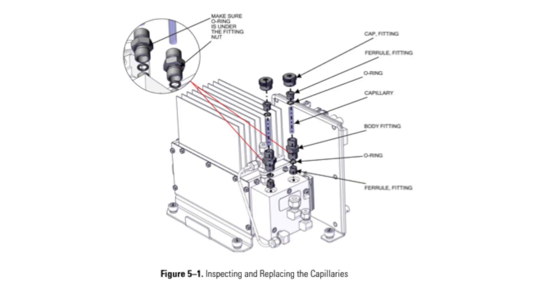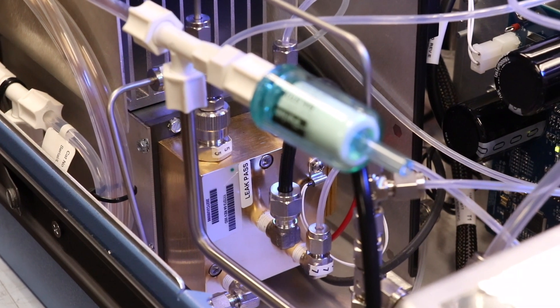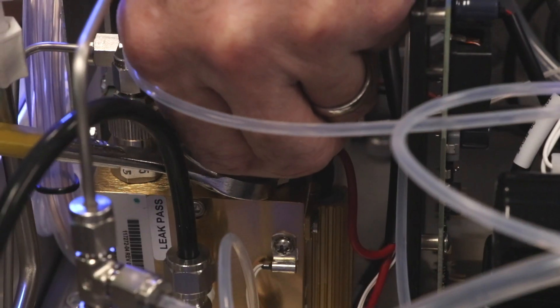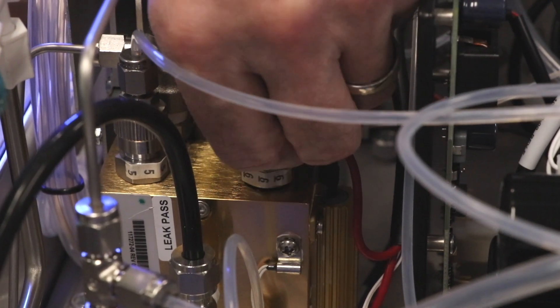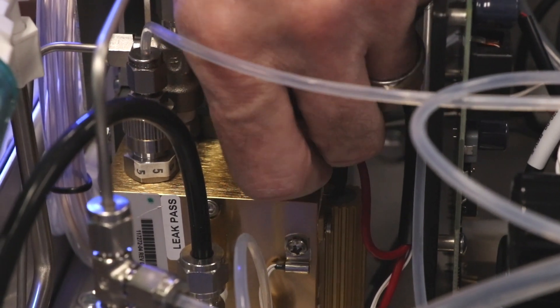Before beginning the capillary inspection and replacement, refer to figure 5-1 in the manual for an exploded view of the capillaries, fittings, and O-rings. Begin by turning off the analyzer, unplug the power cord, and remove the cover. Remove the fittings from the reaction chamber by using a 5-8 inch wrench, being careful not to lose the ferrule or O-ring.